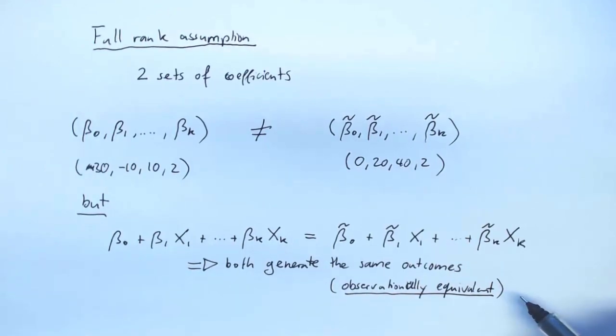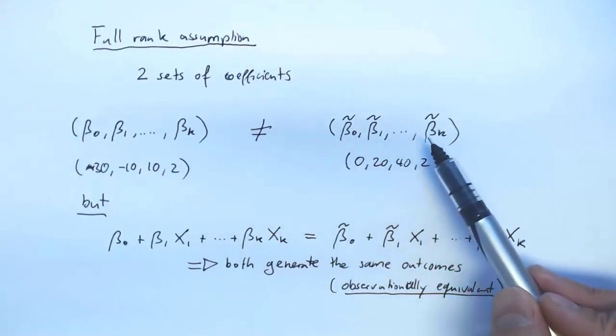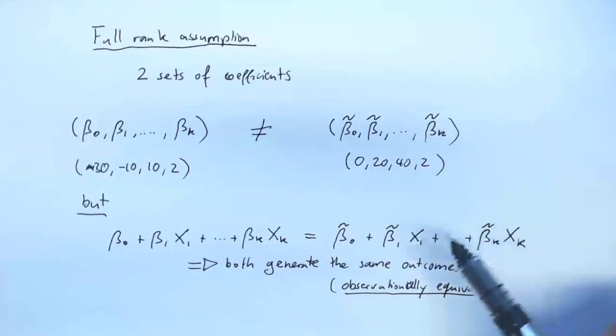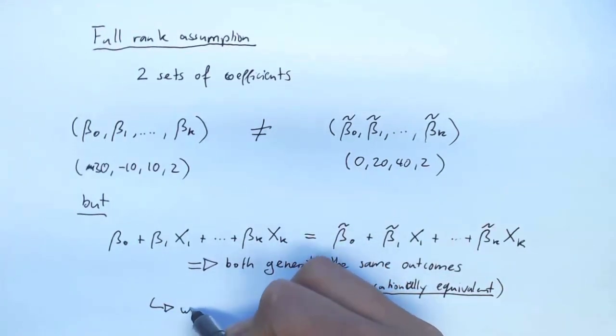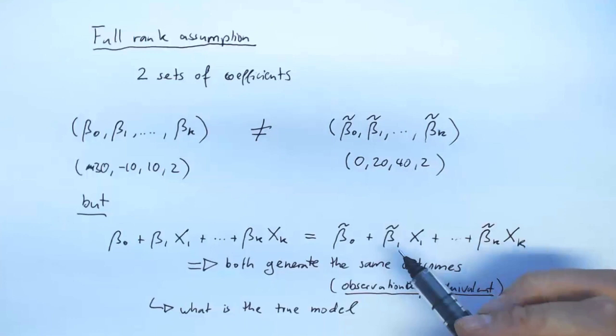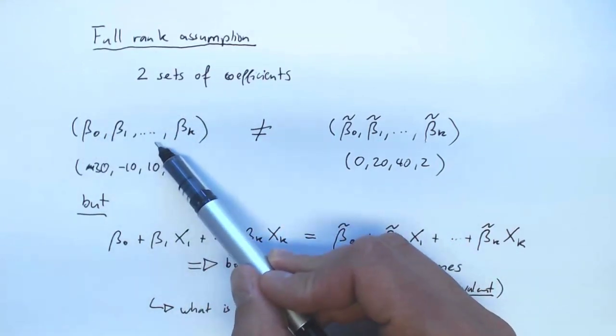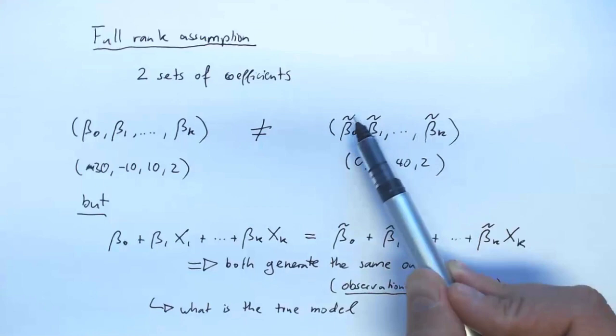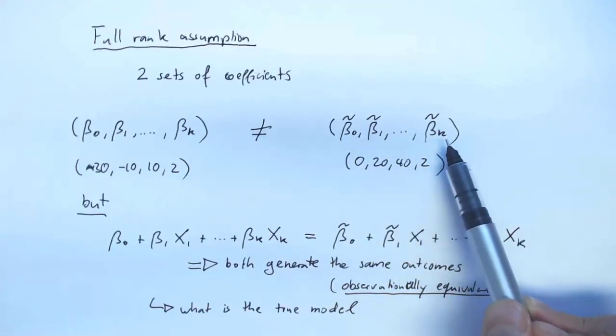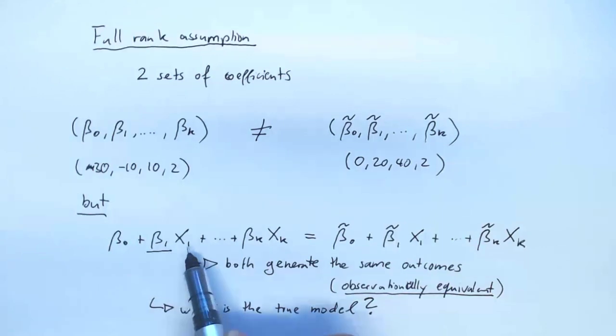So why is that a problem? Well, if I can pick to choose these betas or the beta tildes and I will get regression models that look and feel the same, I'll start wondering what then is the true model. And that is something that I care about because I've set out to estimate those betas. But if these betas have an equal claim to being the true betas as these beta tildes have, then which set of coefficients am I trying to estimate here? I don't know, so I find this very confusing.